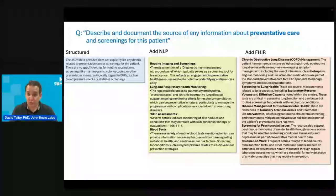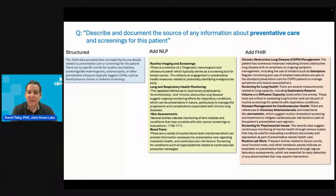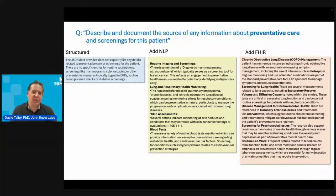The situation is even more severe when you look at preventative care. The prompt is simply: 'describe the source of any information about preventative care and screening.' With structured data only, it tells you the JSON data does not explicitly list any details related to preventative care. But when you add NLP — because we have radiology — we can tell you she's done mammograms, lung and respiratory health screening because she's a smoker, skin assessments for cancer, and blood tests. From the FHIR data you get additional lab reports, pulmonary breathing capacity tests, and even psychosocial screening. You can see the huge gap in clinical completeness based on how much data you've integrated.